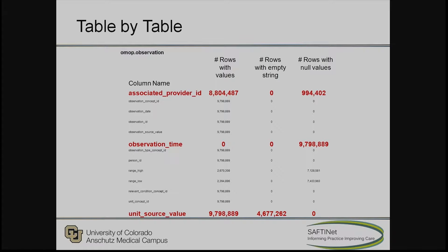We went table by table and had output like this for the observation table. We could see when we had null strings and when we had null values, and again, we checked whether there was any information loss along the way.